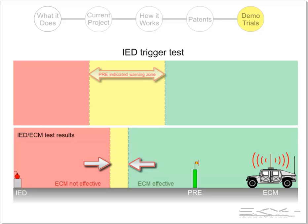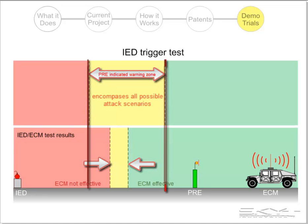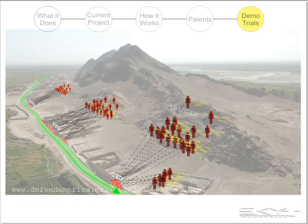The range over which triggering is intermittently successful is shown in yellow in the bottom part of the slide, and it is narrower than the PRE device-indicated warning zone — this is a key point. This is because the predicted warning zone encompasses all possible attack scenarios, which includes but is not limited to the specific attack scenario used in the experiment. There are a lot of possible attack scenarios, and each one will potentially result in a different ECM protection range — maybe different by a little or maybe different by a lot.